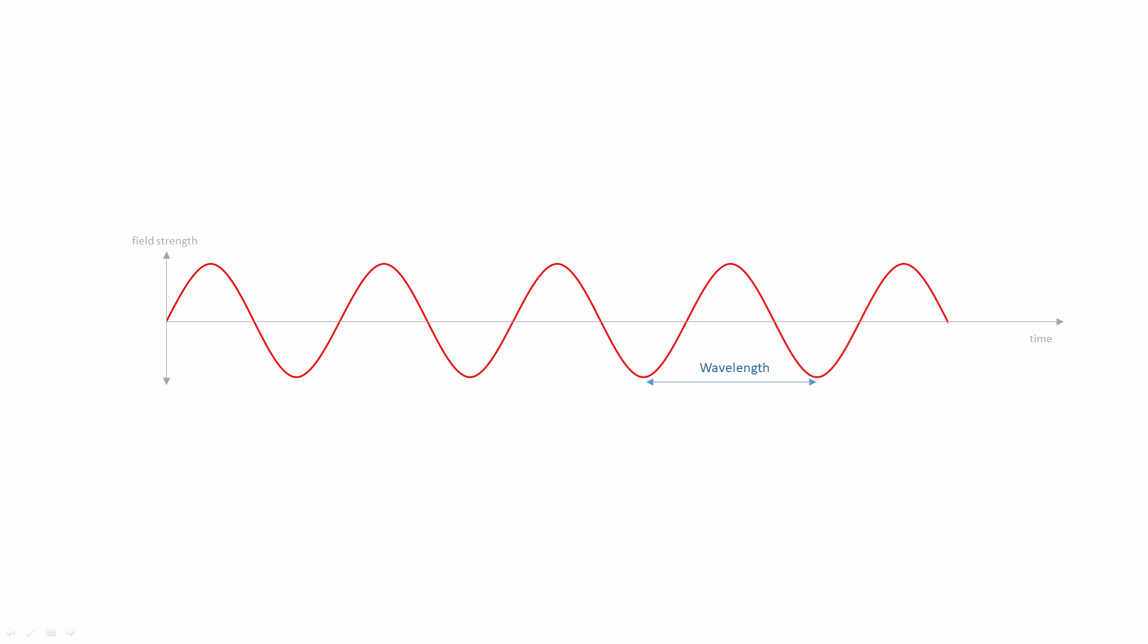The distance between any two corresponding points on the wave is known as the wavelength. The wavelength, which is measured in meters, can be seen here, or here, or here.